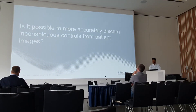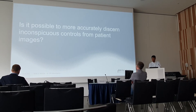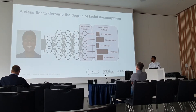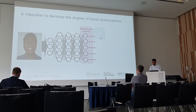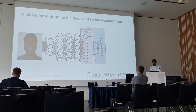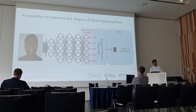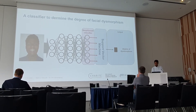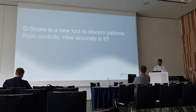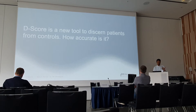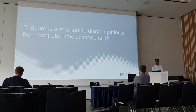So we wondered: is it possible to more accurately discern inconspicuous controls from patient images? Back in 2020, we had already suggested that it should be possible to use the output of Deep Gestalt, put it into a support vector machine, and calculate a single score that would be a measure of the degree of facial dysmorphism to close this diagnostic gap. This idea was taken further by the developers of Face2Gene and Deep Gestalt — they trained a more sophisticated model on a far larger dataset, and they called this new tool D-score.